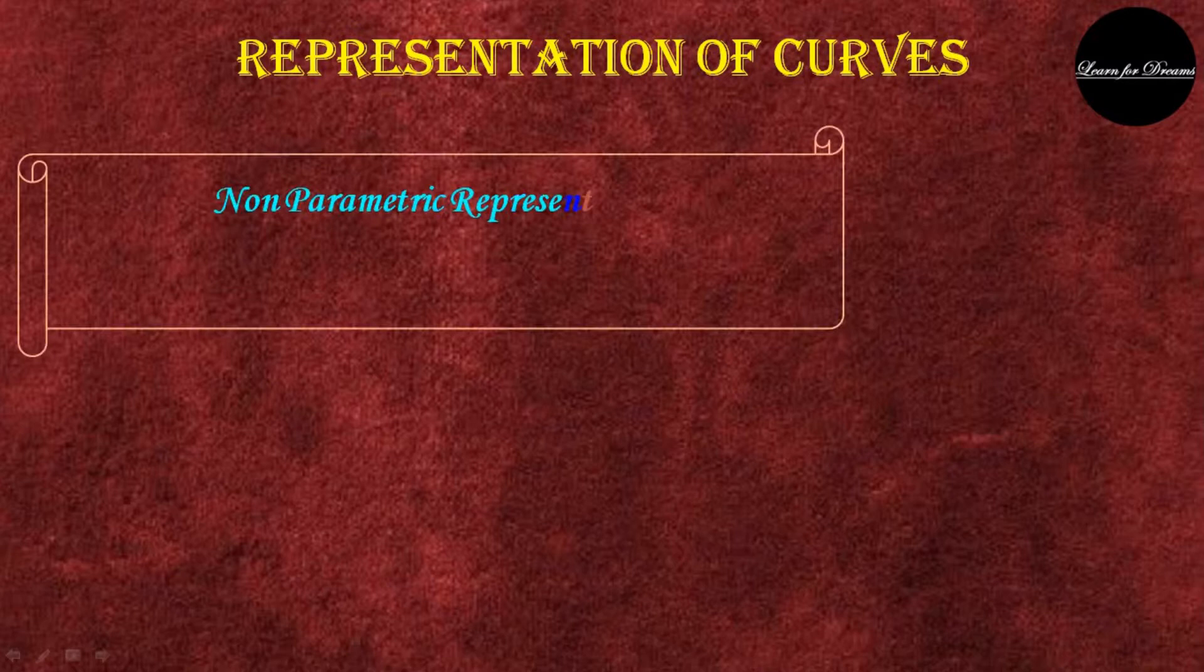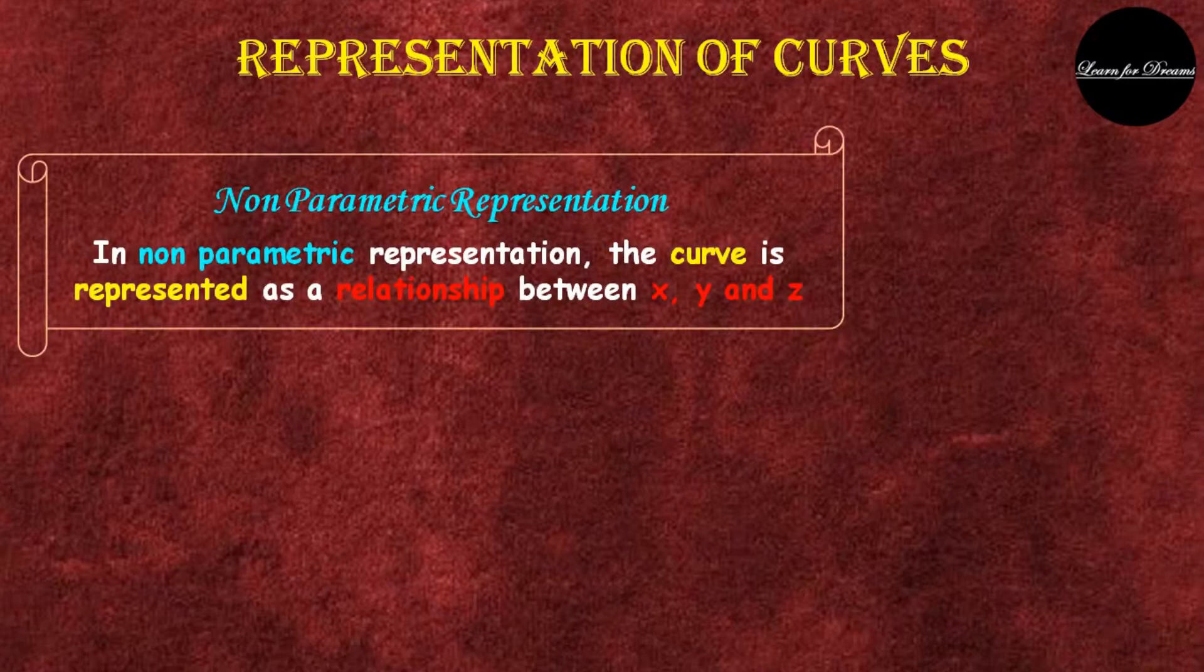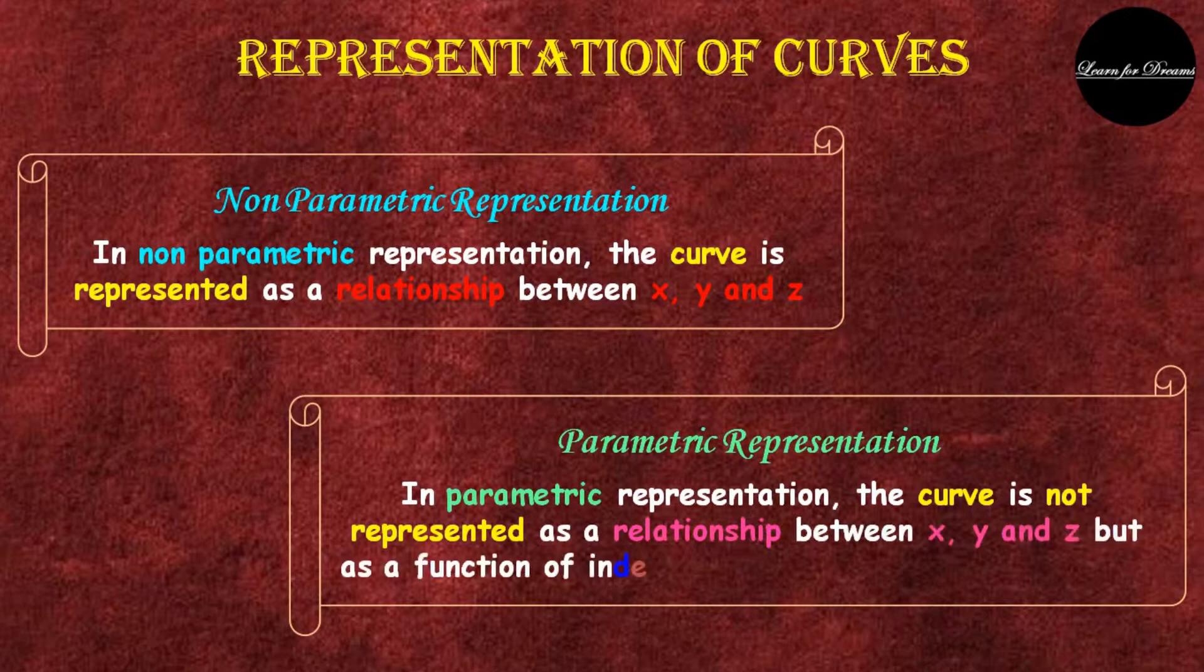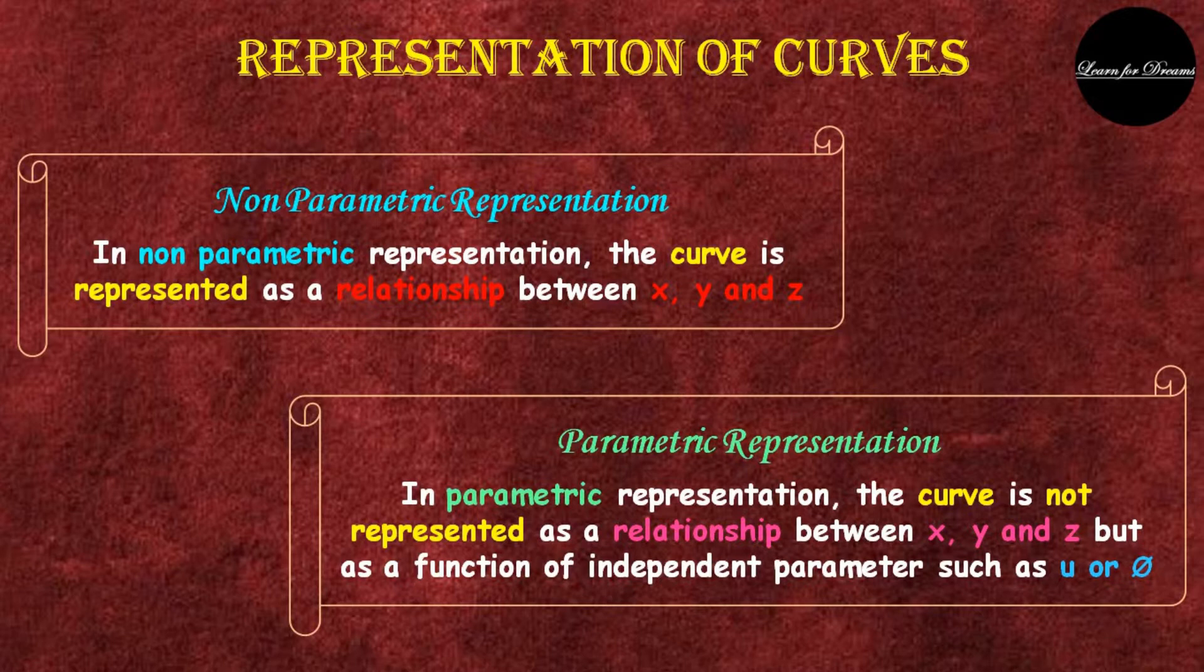First one is non-parametric representation. In non-parametric representation, the curve is represented as a relationship between x, y, and z. Next is parametric representation. In parametric representation, the curve is not represented as a relationship between x, y, and z.